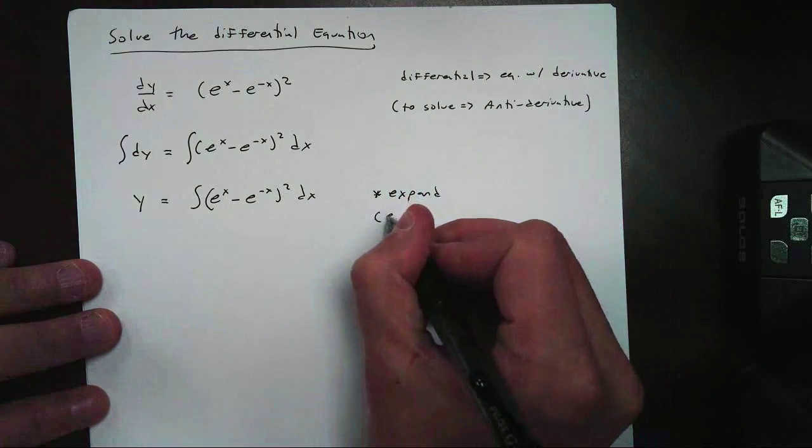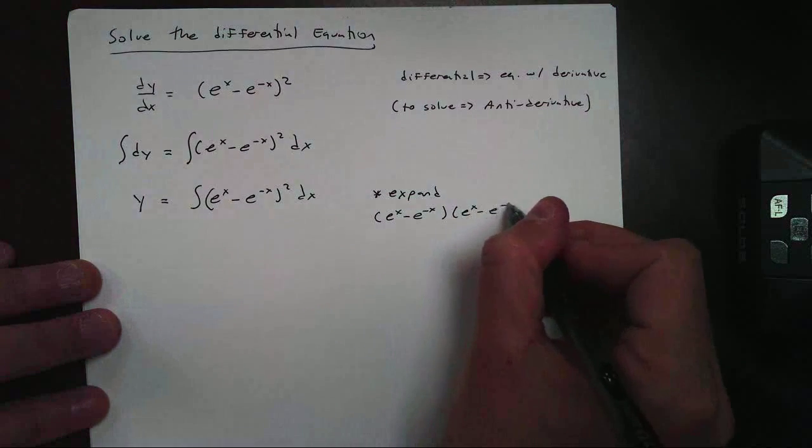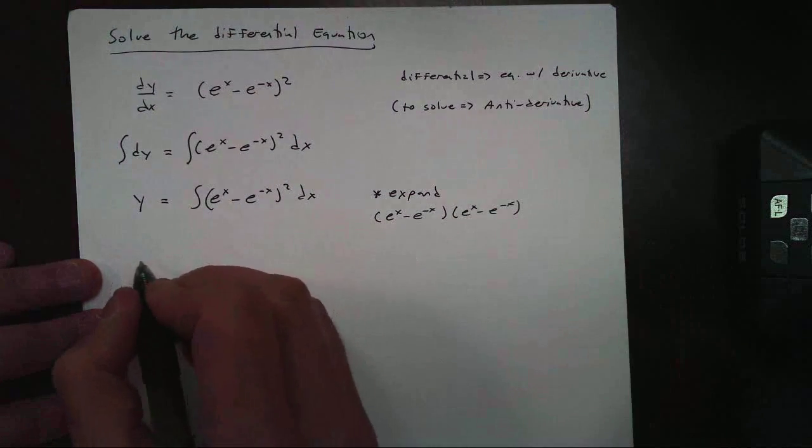We're going to expand the following: e to the x minus e to the negative x times e to the x minus e to the negative x. I'm just going to expand it.